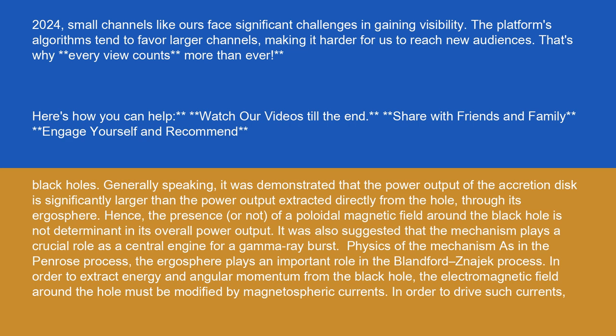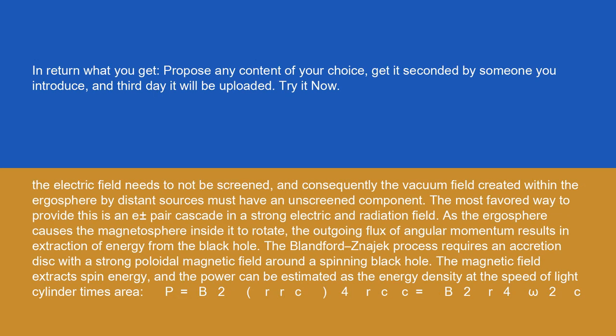In order to extract energy and angular momentum from the black hole, the electromagnetic field around the hole must be modified by magnetospheric currents. In order to drive such currents, the electric field needs to not be screened, and consequently the vacuum field created within the ergosphere by distant sources must have an unscreened component. The most favored way to provide this is an e-plus or e-minus pair cascade in a strong electric and radiation field. As the ergosphere causes the magnetosphere inside it to rotate, the outgoing flux of angular momentum results in extraction of energy from the black hole.